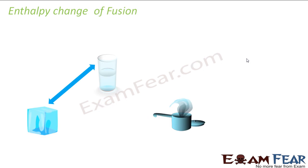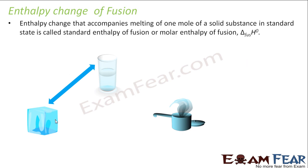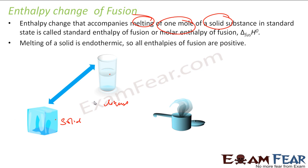We have different types of enthalpy in the case of phase change. The first is fusion. In the case of fusion, there is a phase change from solid to liquid — solid to liquid — so melting of solid to liquid, or vice versa. This is called enthalpy of fusion. You take one mole and change the state from solid to liquid or liquid to solid. Please note: the melting of solid is always endothermic — it needs energy, so it is always positive.